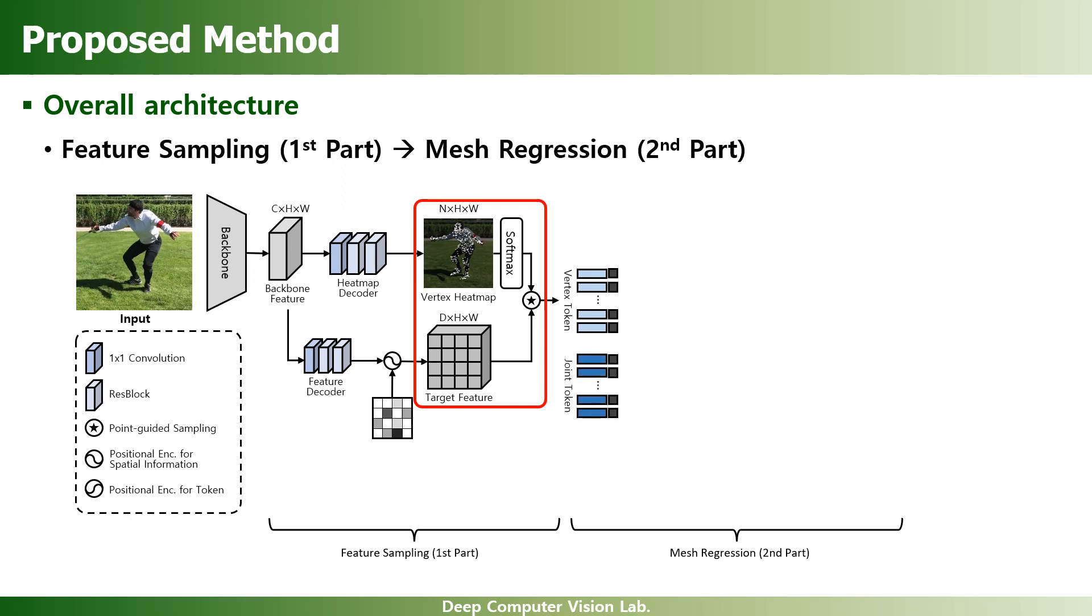Unlike the vertex token, the joint token is randomly initialized and optimized during training. Grid feature is also used to consider the united human body structure in a global manner.